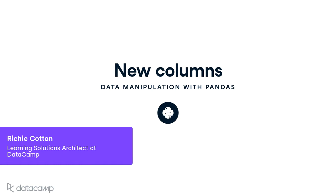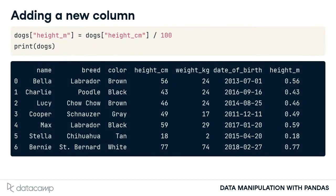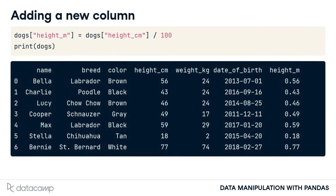You may have to add new columns derived from existing columns. Creating and adding new columns can go by many names, including mutating a data frame, transforming a data frame, and feature engineering.